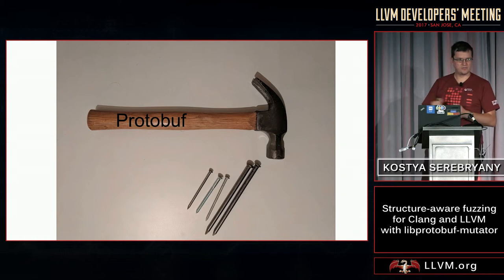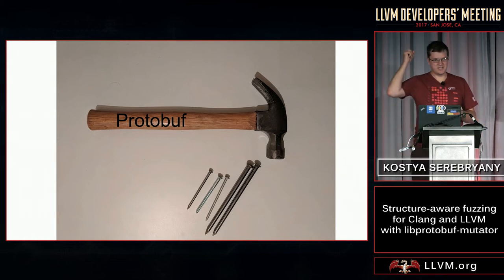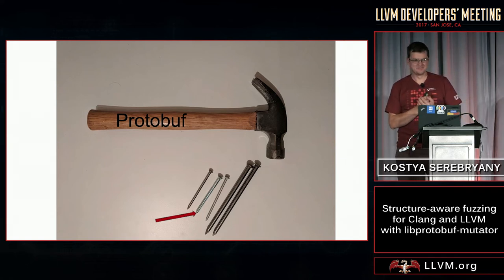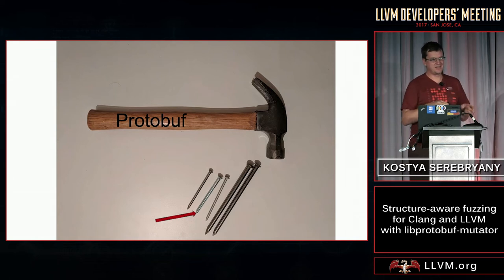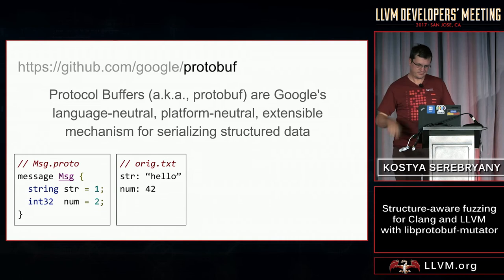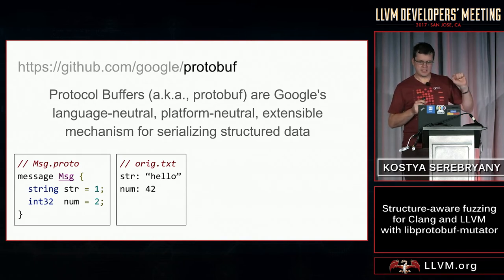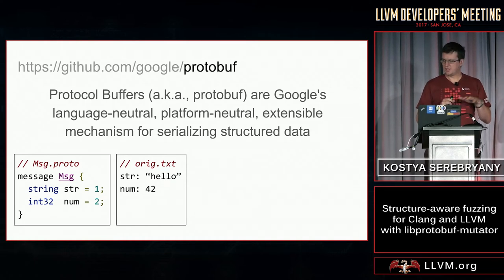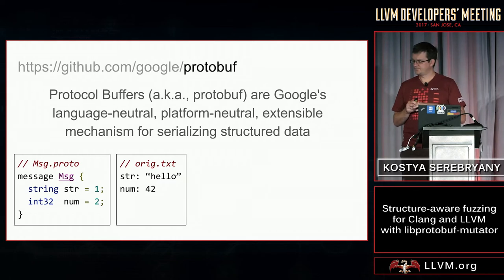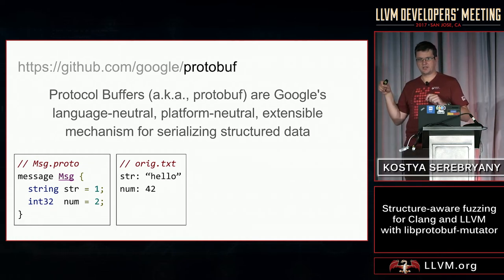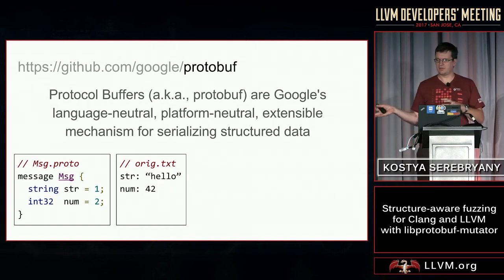We at Google have a big hammer called protocol buffers. And every time we see a nail, we try to apply this hammer to that nail. Sometimes that is not a nail. For those who don't know what protocol buffers are, it is a mechanism for serializing structured data. The tiny example on this slide shows a data structure defined as a protocol buffer message with two fields — a string and an integer. Protocol buffers also have a binary, highly compressed format as well.